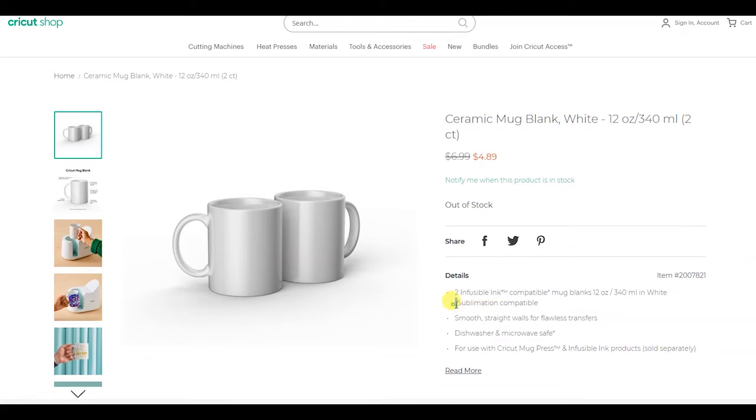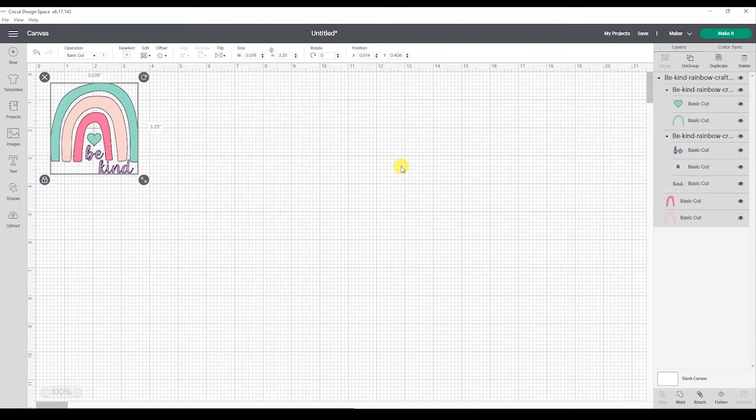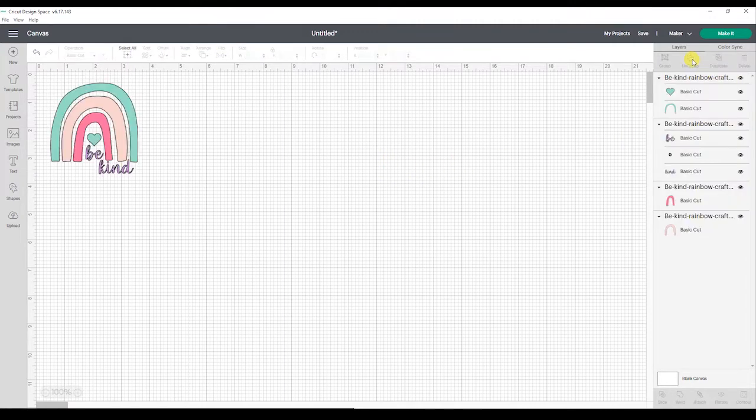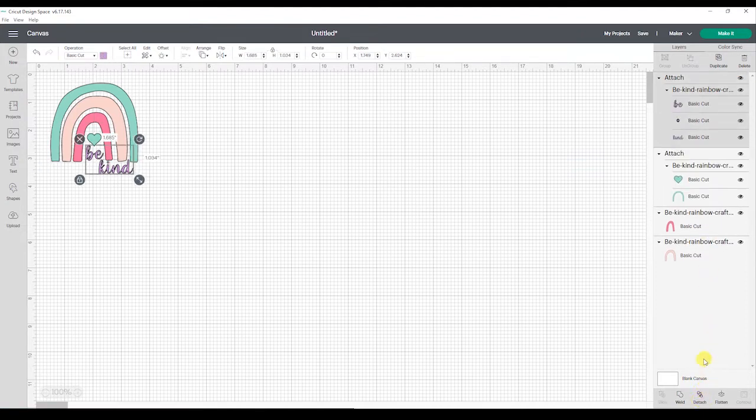Now that we have the design uploaded and resized we need to get parts of the design attached so they will stay together while we cut them. So go ahead and select the entire image and click ungroup. Then select the blue layer and click attach. Now select the purple layer and click attach. The other two layers only have one design element in them so we don't need to do anything with them.